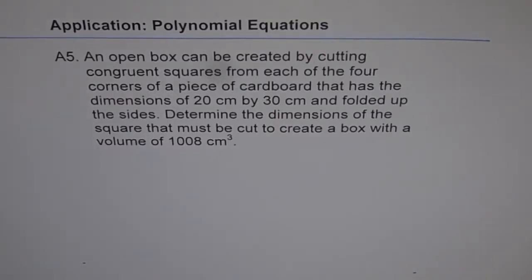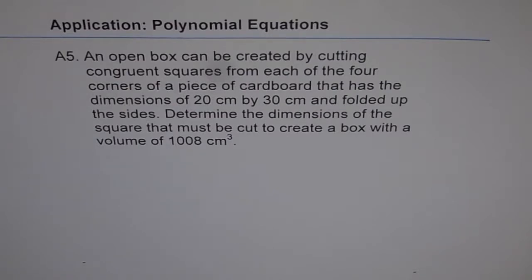Application: Polynomial Equations, A5. An open box can be created by cutting congruent squares from each of the four corners of a piece of cardboard that has the dimensions 20 cm by 30 cm and folding up the sides. Determine the dimensions of the square that must be cut to create a box with a volume of 1008 cm³.